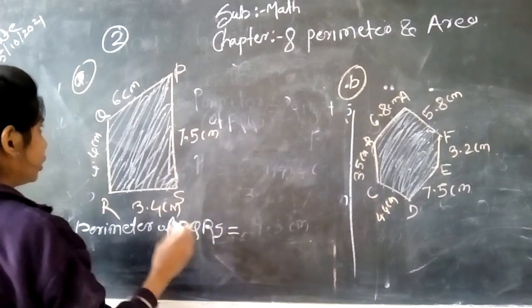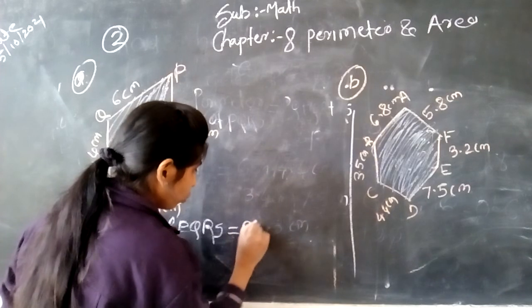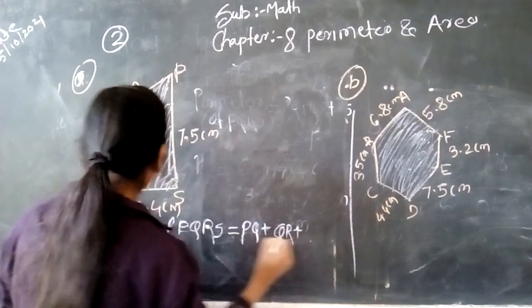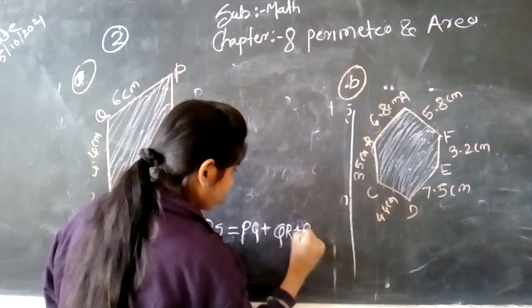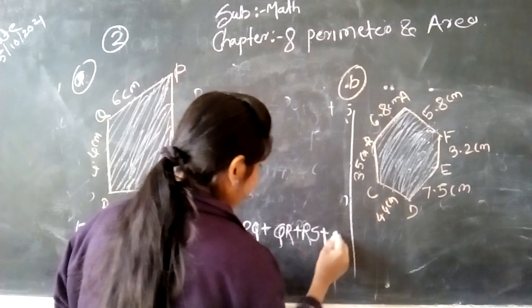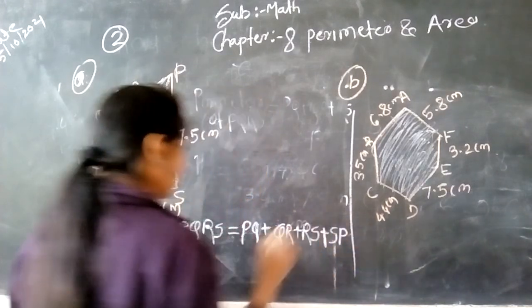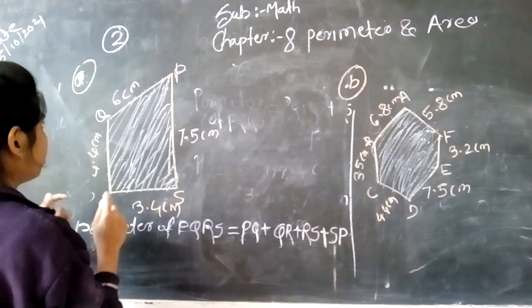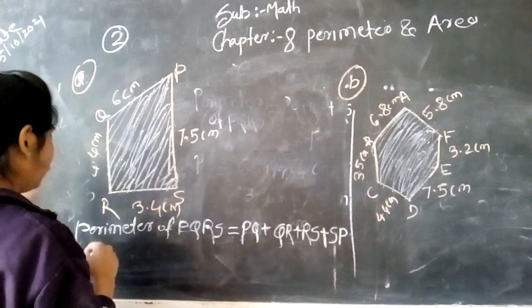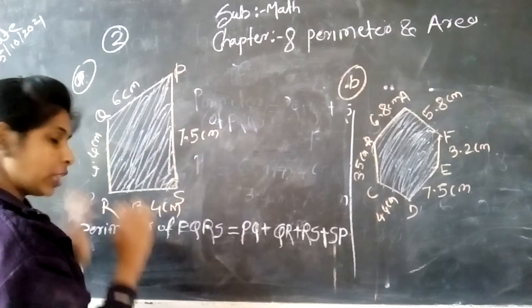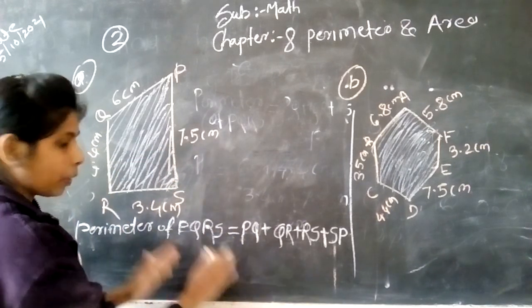Addition of all the sides: PQ plus QR plus RS plus SP. Okay, so we can do it. The dimensions of each side are given. Like 6 cm, 4.4 cm, 3.4, and 7.5. So we can put the dimensions in that side.